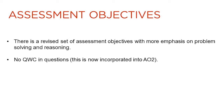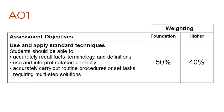There are new assessment objectives for the new GCSE, putting more emphasis on problem solving and reasoning. The quality of written communication will no longer be assessed separately — it will now be incorporated into AO2. AO1, using and applying standard techniques, has not changed very much. Students should be able to recall accurately facts, terminology and definitions, use and interpret notation correctly, and carry out routine procedures or set tasks requiring multi-step solutions. At foundation tier the weighting for AO1 is 50%; at higher tier it is 40%.